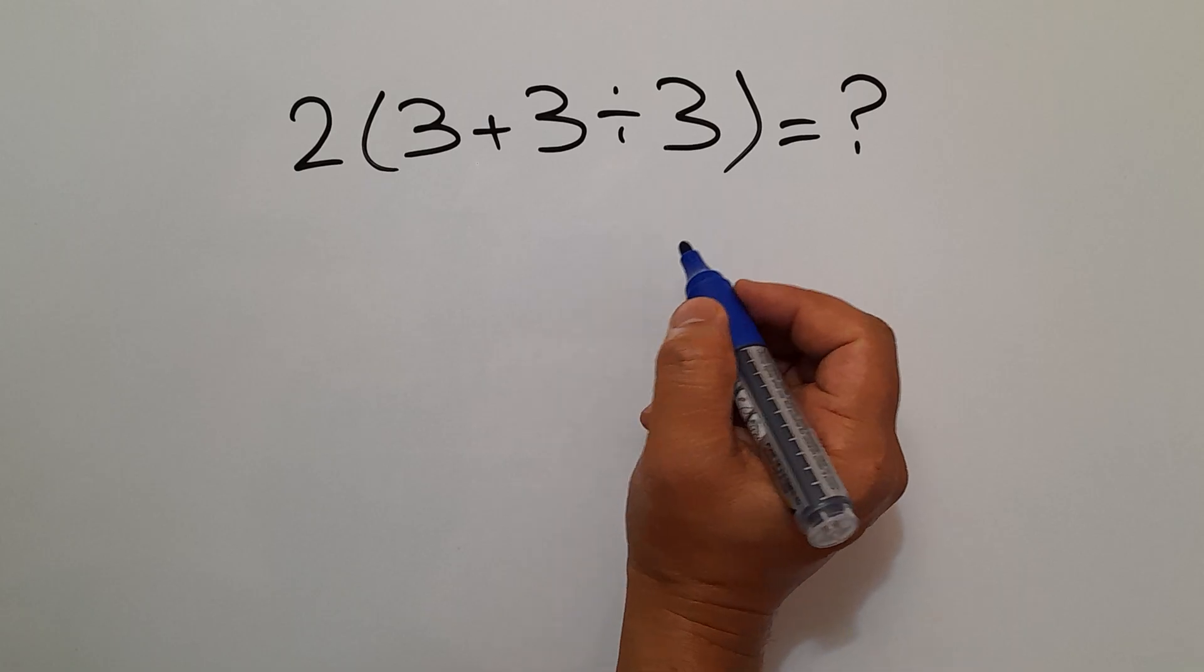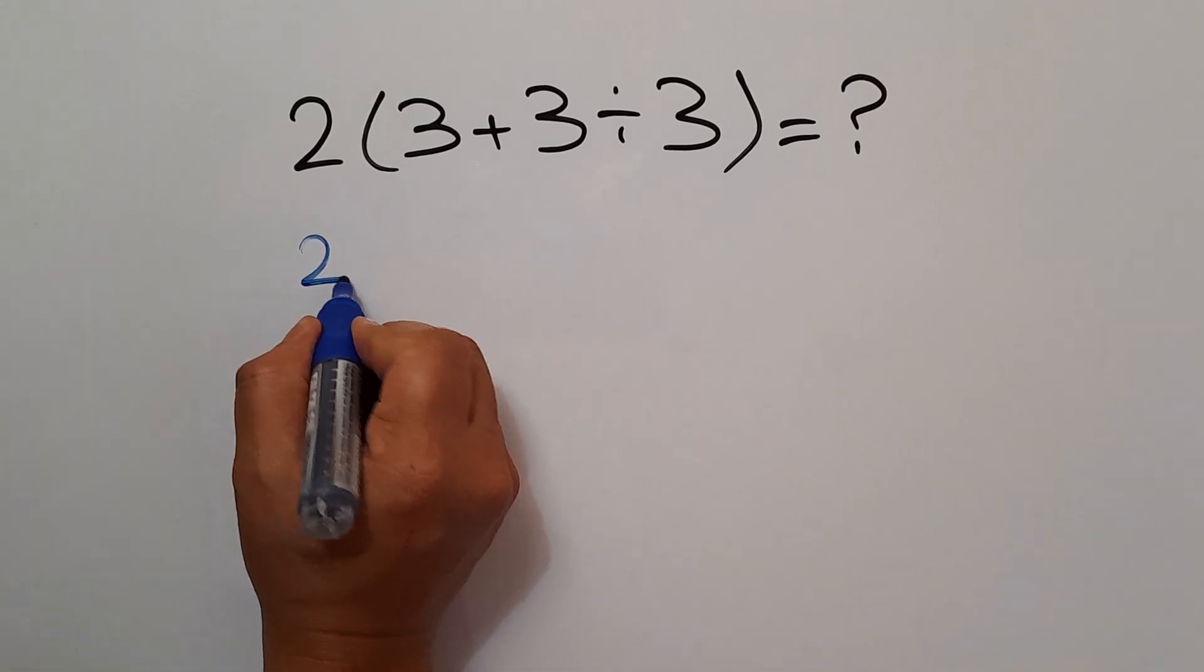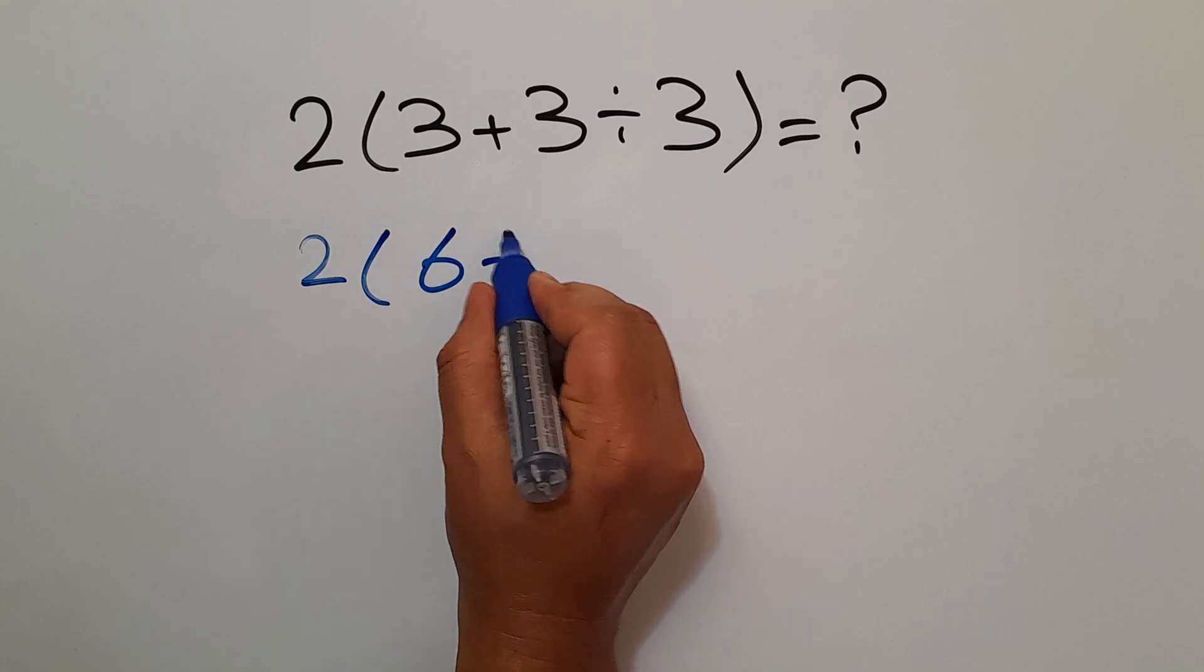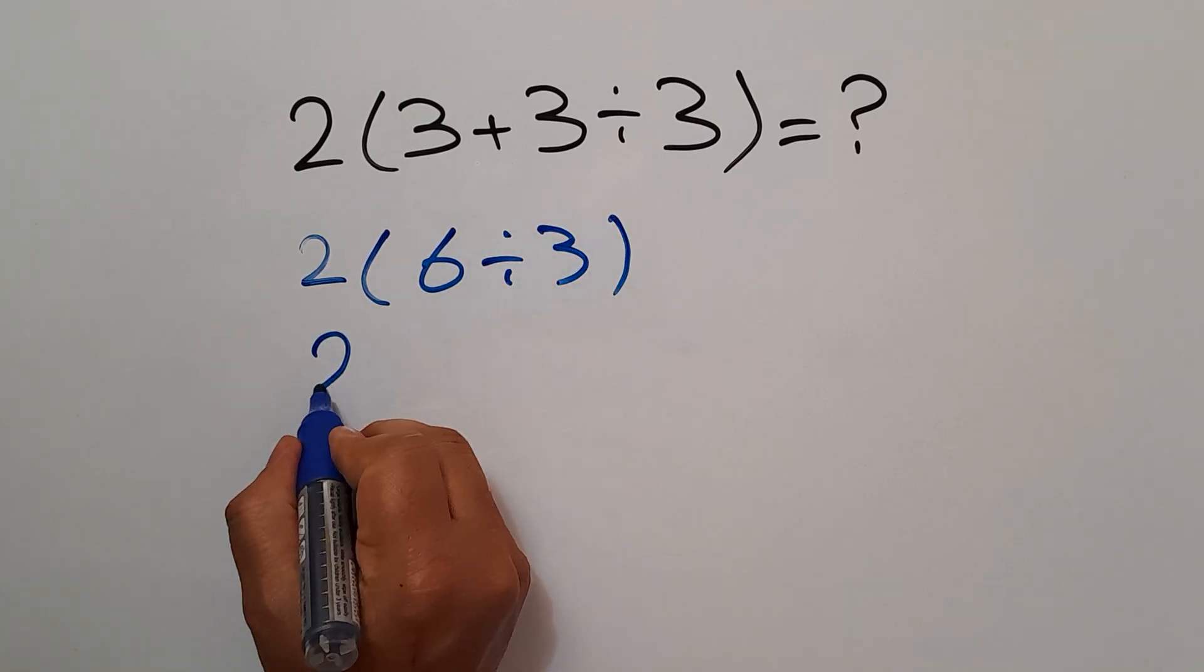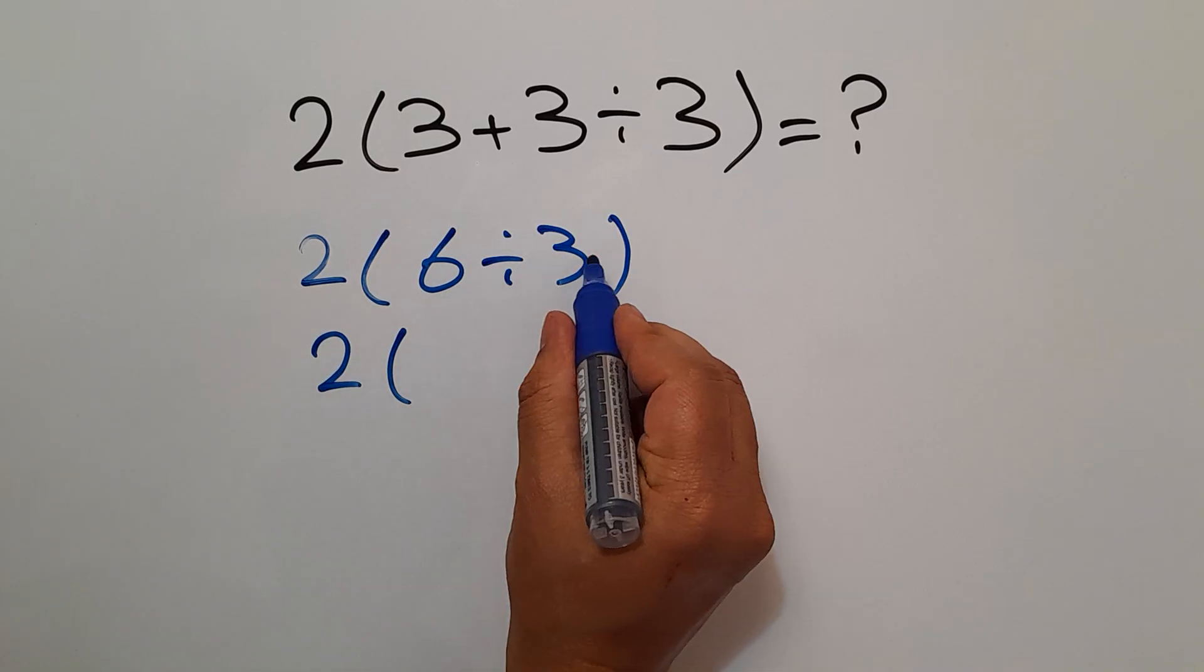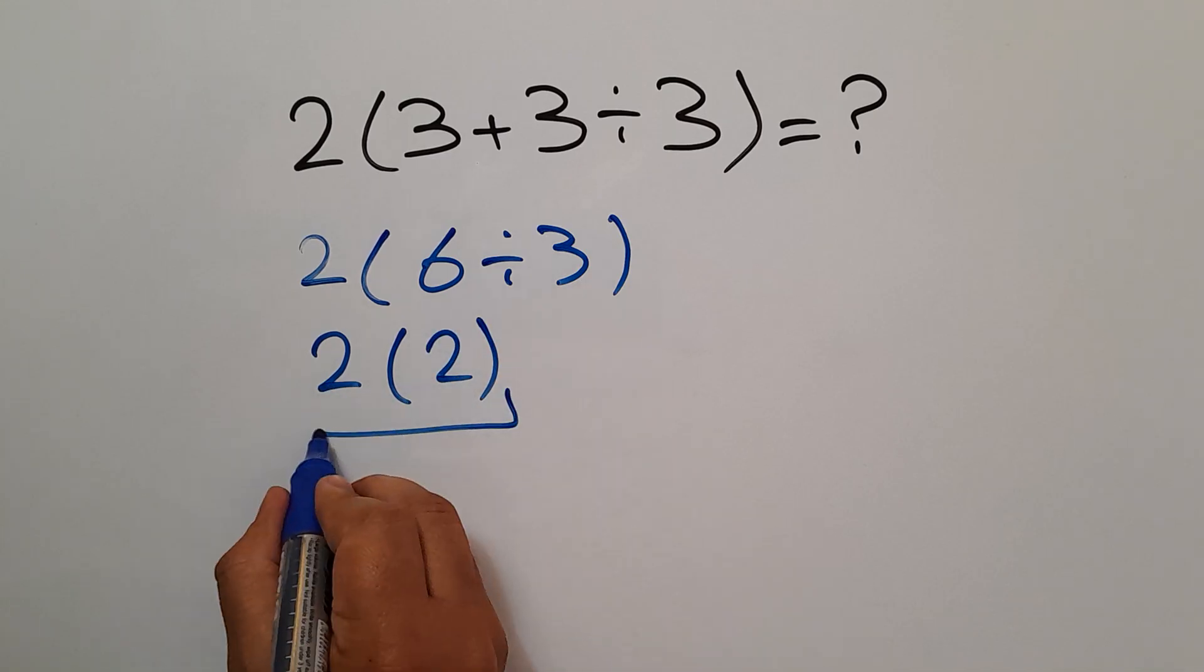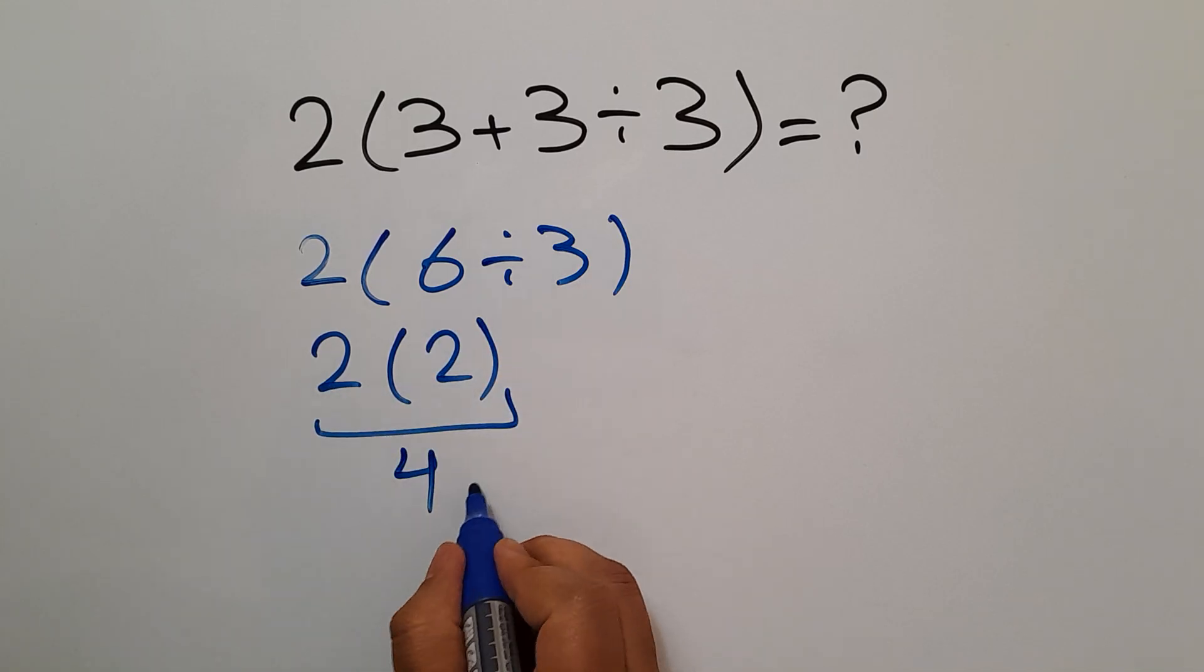Are you ready to solve? Let's go ahead and get started. We have here 2 times 3 plus 3 equals 6, then divided by 3. 2 times 6 divided by 2 equals 2, and finally 2 times 2 equals 4. But this answer is not correct.